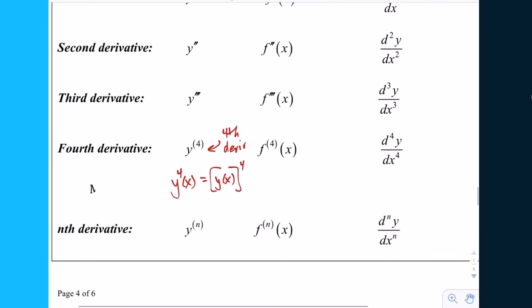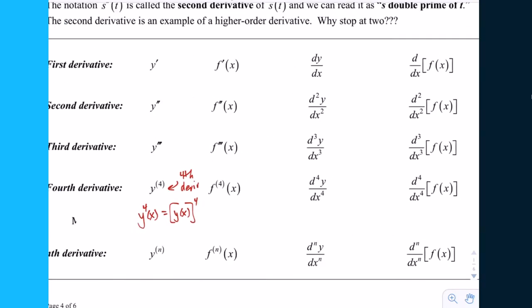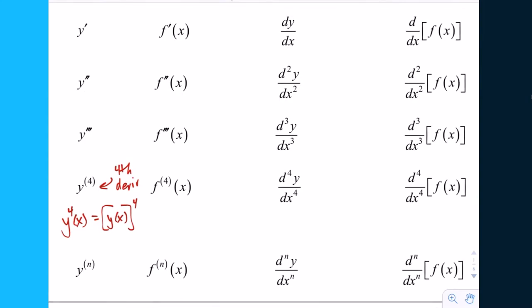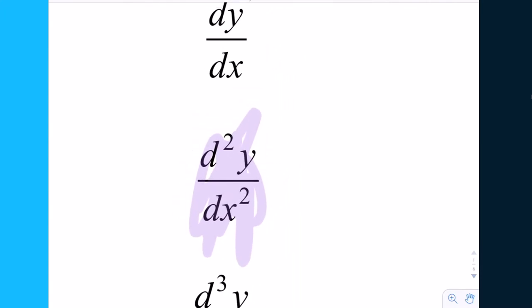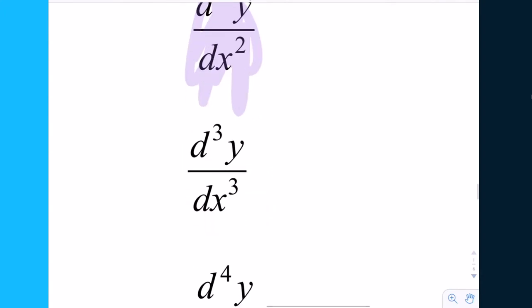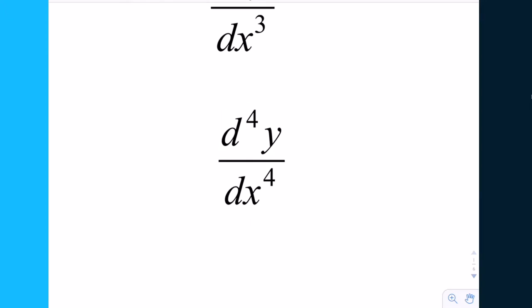The reason we do that is because this would be the fourth derivative. Without that, if you just say y to the fourth of x, that is the same as y of x, the function, raised to the fourth power. So the parentheses set it off from being an exponent. That's what we do with the prime notation, and it works similarly with f, which is why Leibniz notation, I think, is preferable.